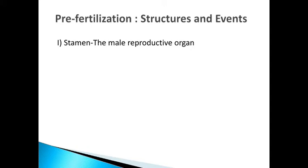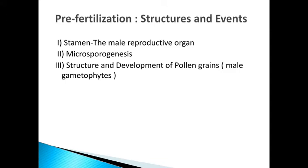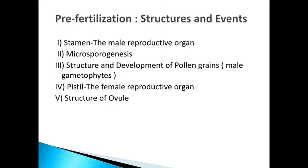The topics we will cover are: number 1, stamen the male reproductive organ; number 2, microsporogenesis; number 3, structure and development of pollen grains and male gametophytes; number 4, pistil the female reproductive organ; number 5, structure of ovule; number 6, megasporogenesis. Pollination also falls under the pre-fertilization process. Let us learn these one by one.